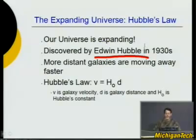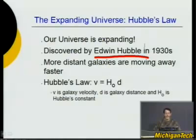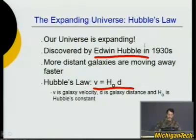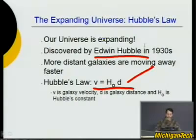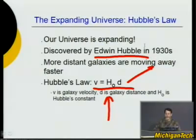When Einstein heard this, he didn't say 'oh, that can't be right.' He said 'oh, duh, I should have thought of that.' He should have thought the universe was expanding but didn't — Einstein had assumed a static universe. Hubble even created a simple model: a galaxy's velocity away from us is proportional to its distance away from us, proportional through a constant now called Hubble's constant.